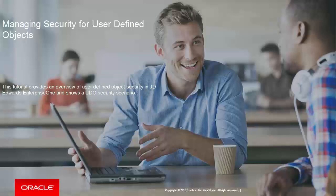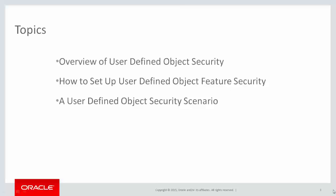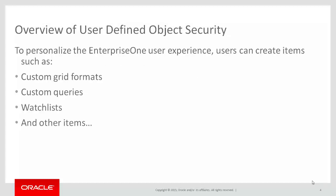Welcome to the Managing Security for User-Defined Objects Tutorial. This tutorial provides an overview of user-defined object security in JD Edwards Enterprise One, shows how to set up user-defined object feature security, and shows a two-part security scenario that depicts how to authorize an Enterprise One user to create and publish user-defined objects, and then how to authorize other users to view a shared user-defined object.